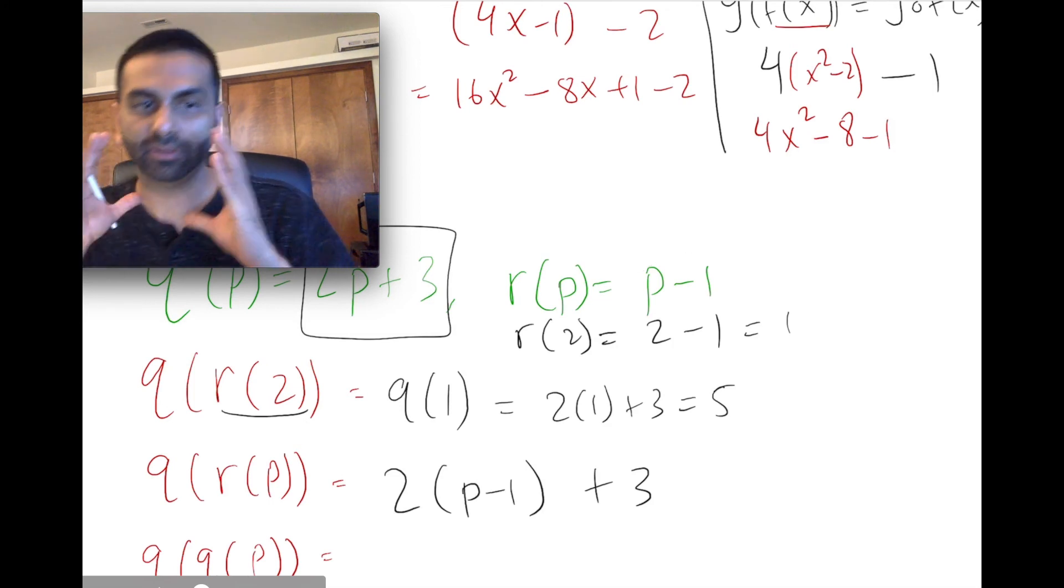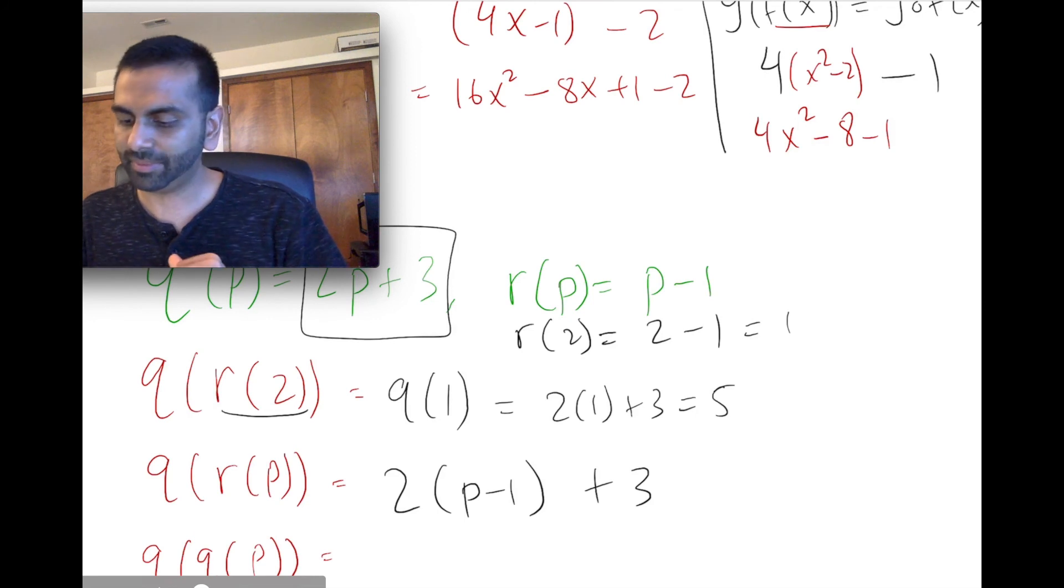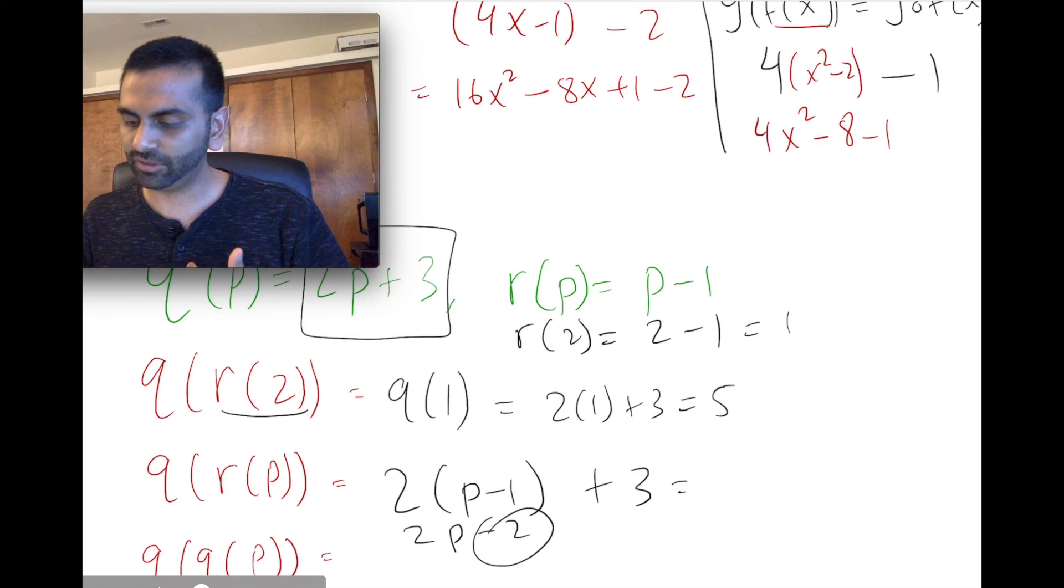So 2 times r of p, which is p minus 1, plus 3. And you can simplify this. You can distribute the 2 to get 2p minus 2, plus 3. And this negative 2 plus 3 is positive 1. So that's going to overall simplify to 2p plus 1.